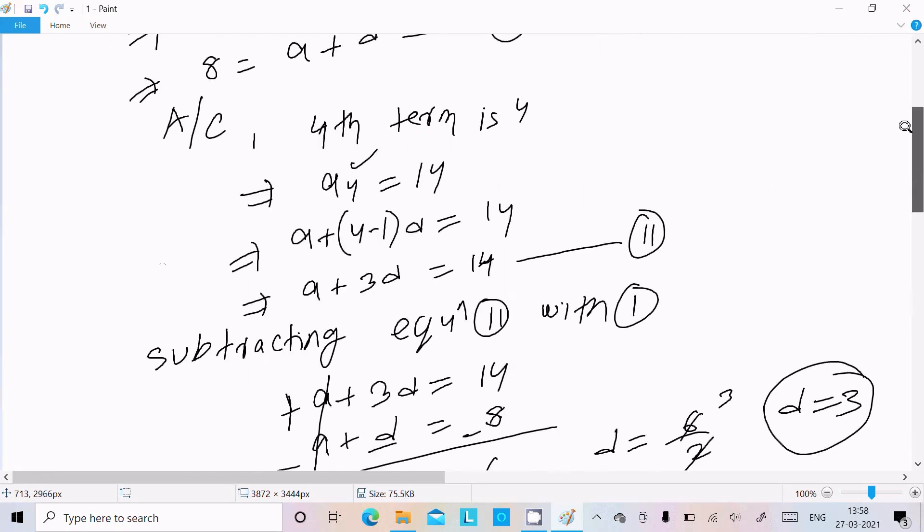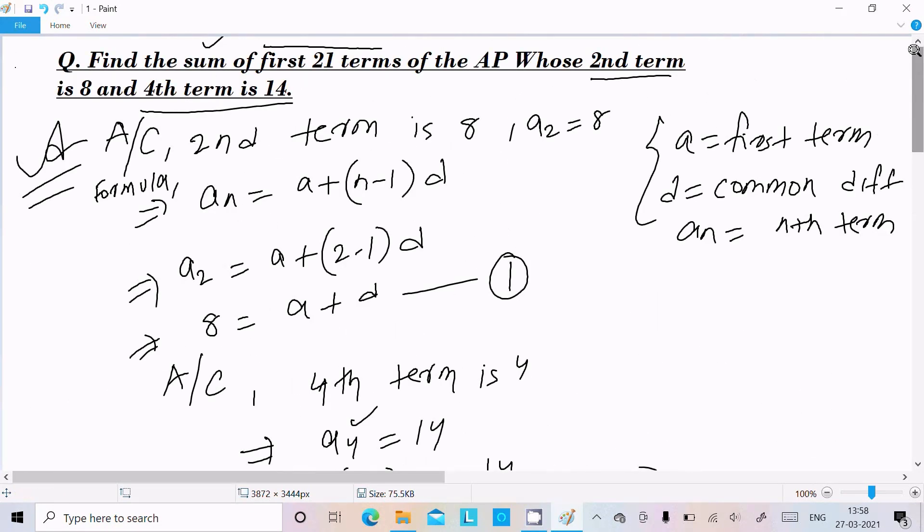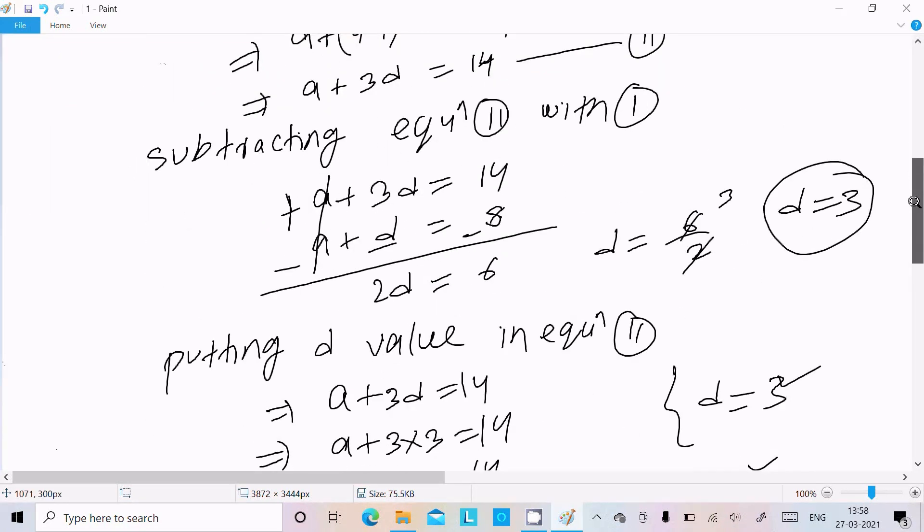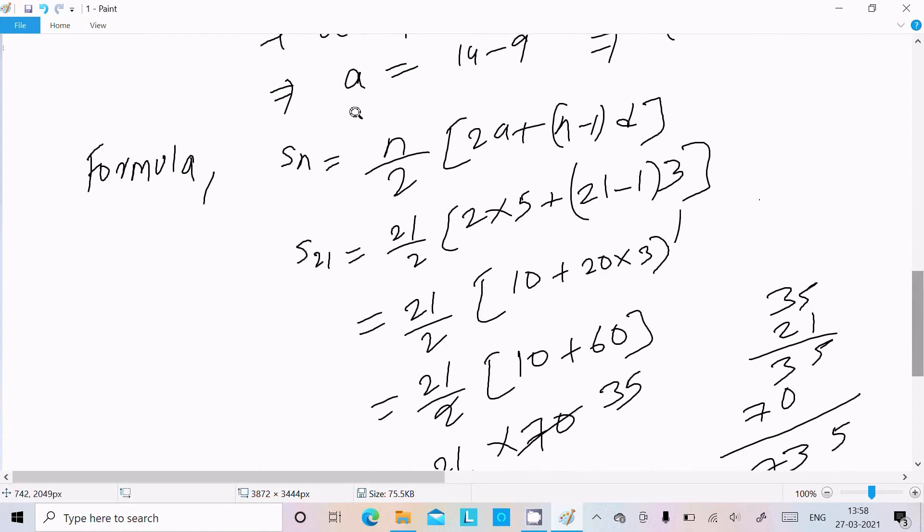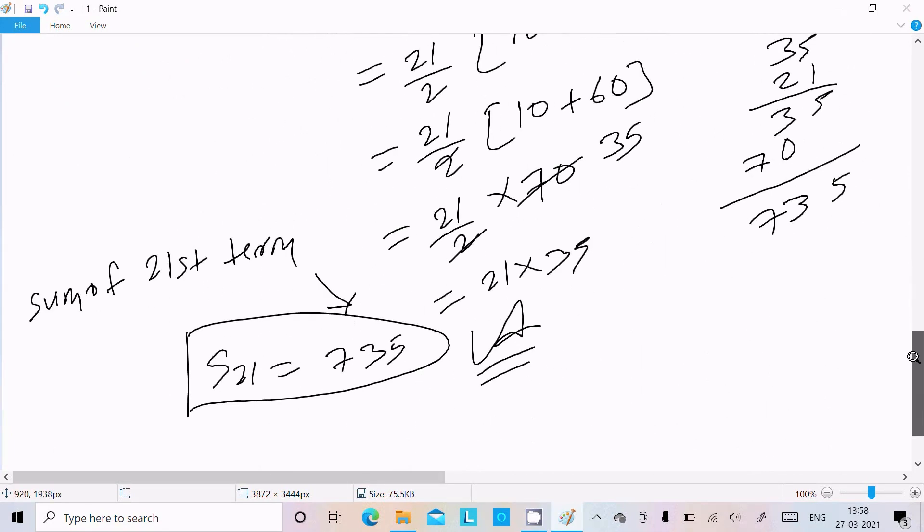So this is the way we can find it. Here a_2 is given as 8, a_4 is given as 14. Use the formula to find a and d, then use the sum formula to easily get the sum of 21 terms.